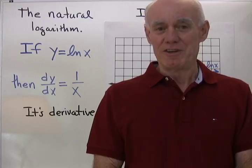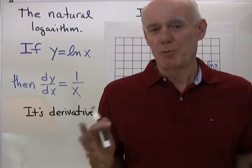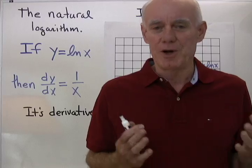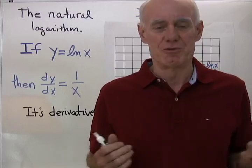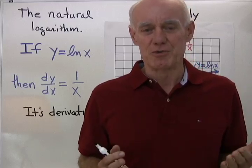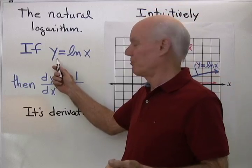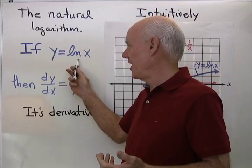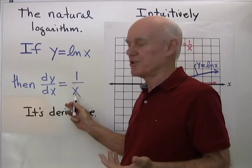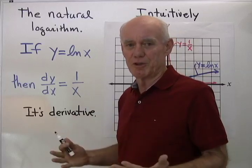Next we want to look at the derivative of the natural log function. What we have is that the natural logarithm function y = ln(x) has a derivative that's just 1/x. Before we use this, we want to have some idea that it's true — we want to feel like this derivative actually is correct.